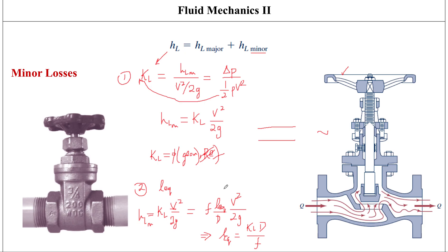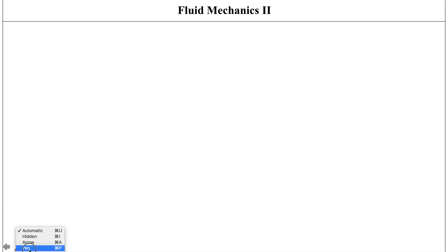In this video series we'll focus on the first method — the loss coefficient method — because in most textbooks this is the approach they typically use. So we'll use the loss coefficient KL to determine minor losses and then look at different kinds of piping components.